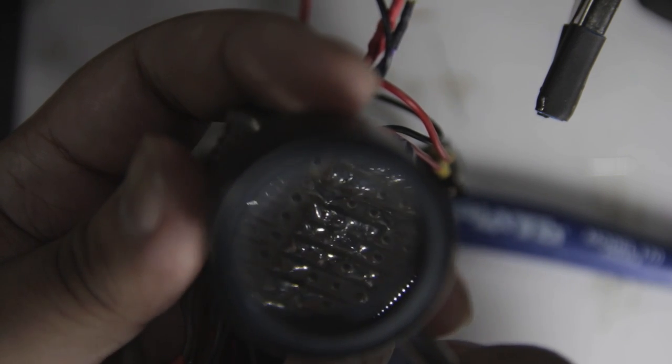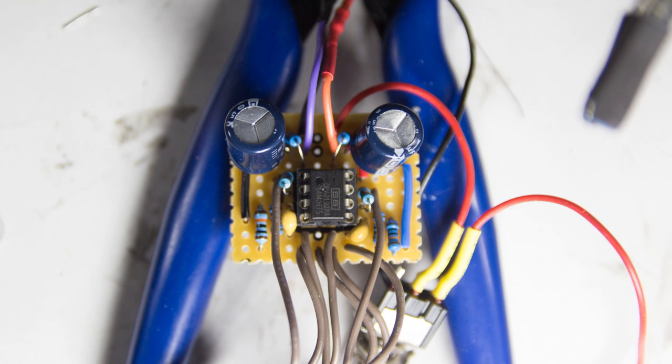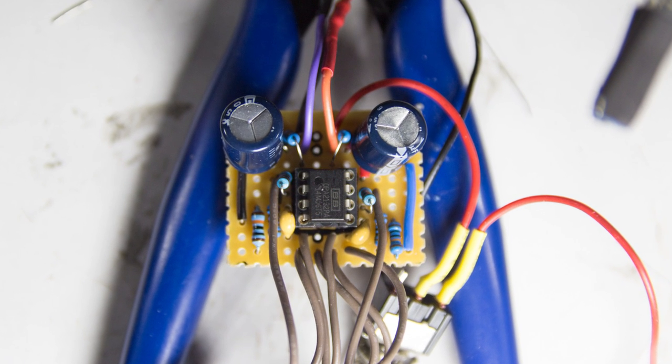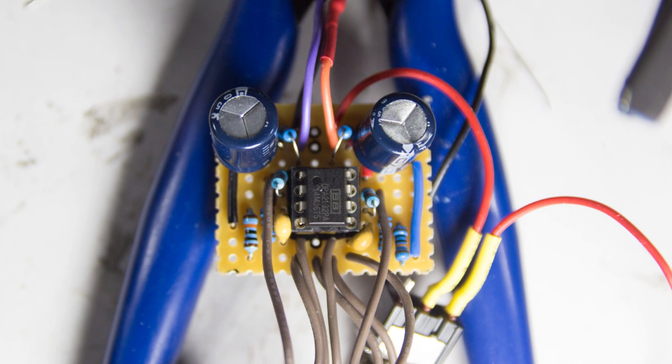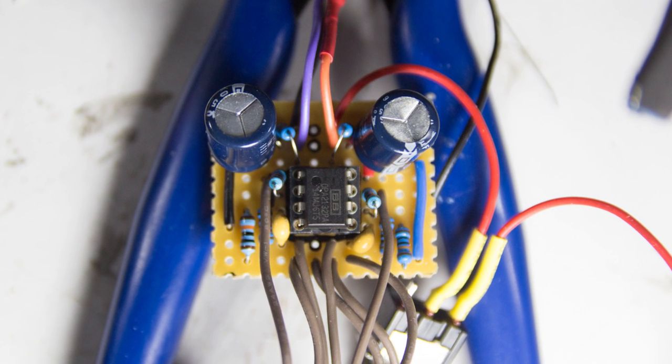And after the alcohol has dried, I'll pop the op amp into the socket. Connecting the two batteries and power it up and test that everything is working correctly, and now we move on to preparing the enclosure for our headphone amplifier.